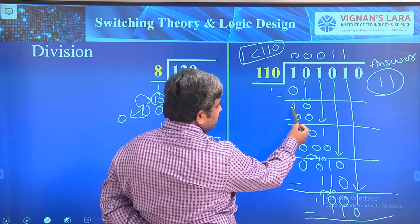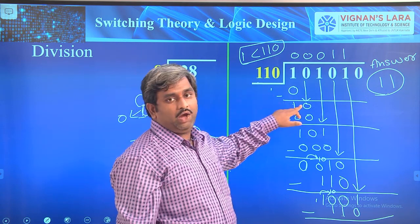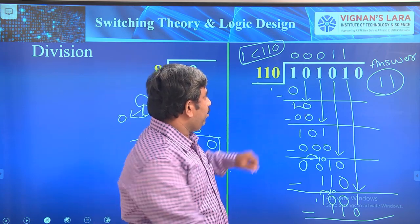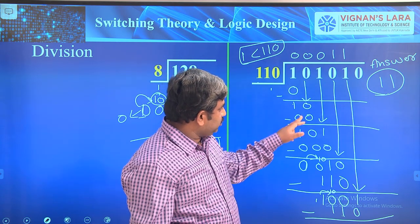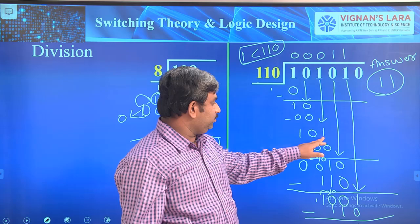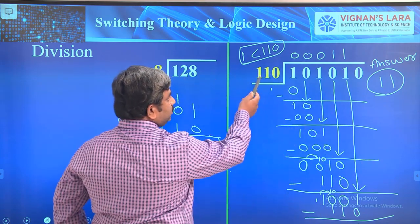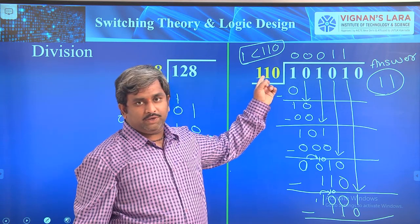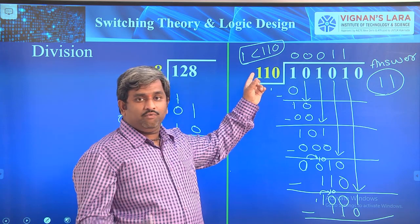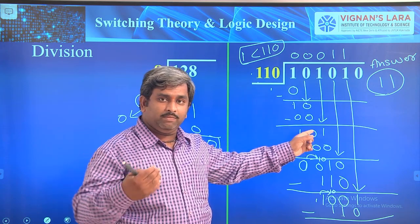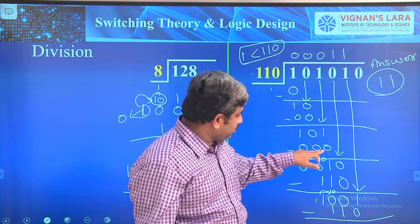Bringing down gives 10, which has only two digits and is not dividable by three-digit 110, so we put 0. Then 101 is five, still less than six (110), so put 0 again. Continuing this process: bring down the next bit to get 1010, which is divisible by 110. The final quotient builds up to 11 with remainder 10.